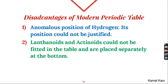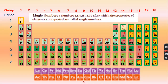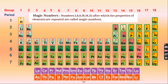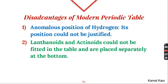The modern periodic table also has a few disadvantages. First, the position of hydrogen remains controversial, just as in Mendeleev's table. It is placed in group 1, but hydrogen is a non-metal while all other group 1 elements are metals, so its position is still not fully justified. Second, lanthanoids and actinoids could not find a place within the main periodic table and are placed separately below it.